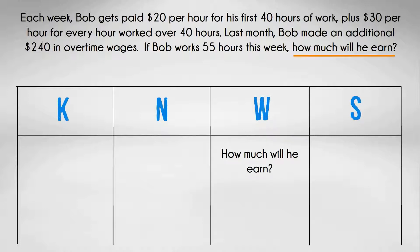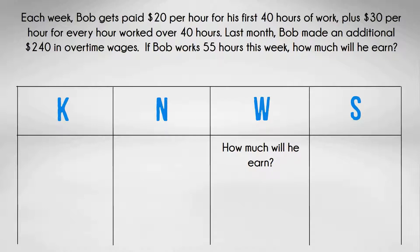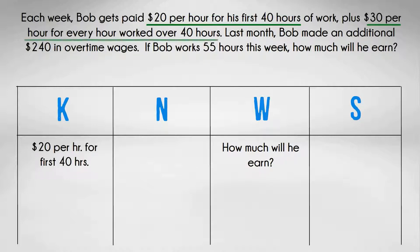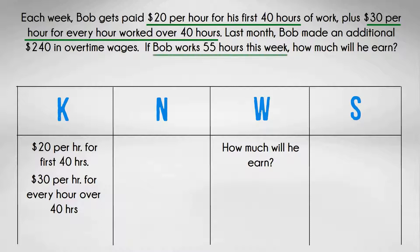What do you know from the information stated in the problem? The facts that you need are: Bob makes $20 per hour for his first 40 hours, $30 per hour for every hour over 40 hours, and Bob worked 55 hours this week.